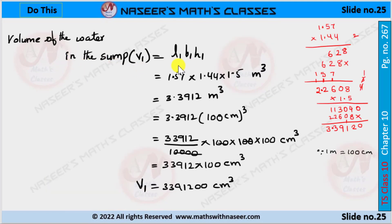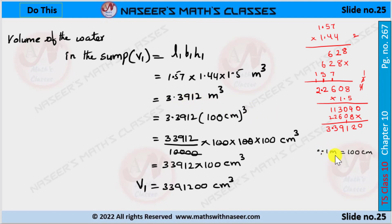Now we are going to find the volume of water in the sump. V1 is equal to L1 × B1 × H1. Here L1 is 1.57, B1 is 1.44, and H1 is 1.5 meters. After multiplying this we get 3.3912 cubic meters. We already know that one meter is equal to 100 centimeters.